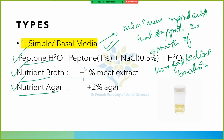Simple media includes: peptone water, nutrient broth, and nutrient agar. For peptone water, the constituents are 1% peptone, 0.5% NaCl, and water. A mnemonic: NPH — No Problem Honey — N for NaCl, P for peptone, H for water (H₂O).